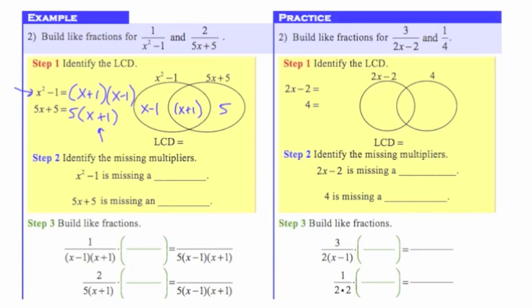If I multiply all of that stuff together, that gives me the LCD. I'll write the coefficient 5 first, then the next factor (x plus 1), and then the final factor (x minus 1). So that is my LCD: 5 times (x plus 1) times (x minus 1).